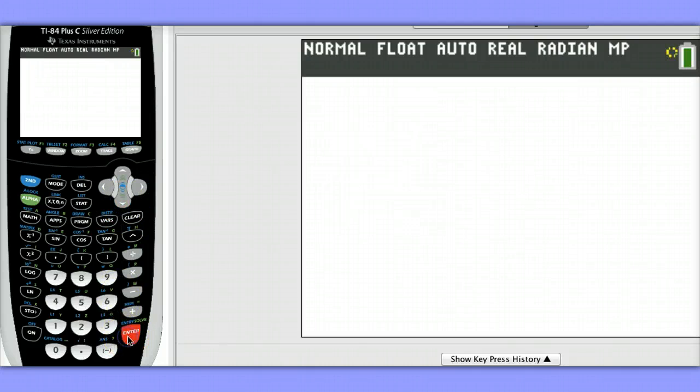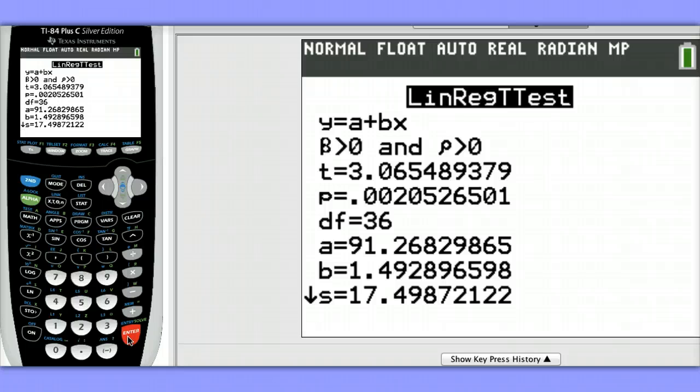Let's go down to Calculate to see the results of our significance test. We can see our test statistic value is about 3.07. Our p-value is 0.002. That means that there's a statistically significant positive linear relationship between crying and IQ.